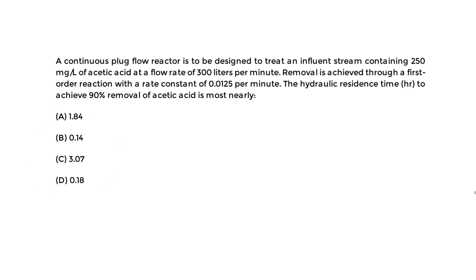Let's begin writing what we are given. Some terms do not have variables attached to them. We know that the influent stream contains 250 mg per liter of acetic acid — that's the influent, what comes in, into a reactor. And it's a continuous plug flow reactor, so you have to be careful with the keyword 'continuous plug flow.'